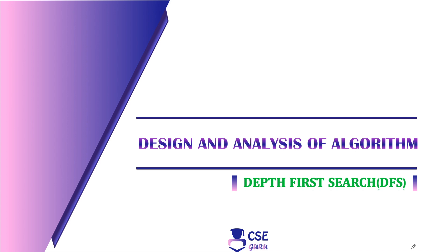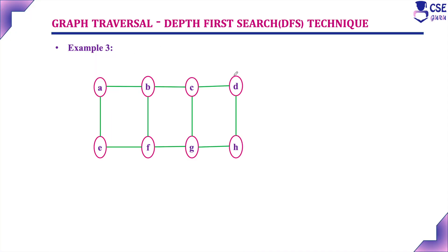Welcome to CSI Guru. In this session, we will discuss an example to implement depth first search traversal technique. We have already discussed two examples to implement depth first search traversal technique. This is the third example. The procedure is: initially we need to consider one vertex as the starting vertex and mark this vertex as visited.